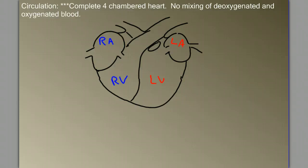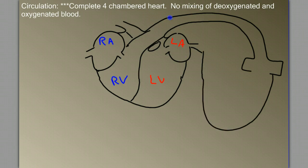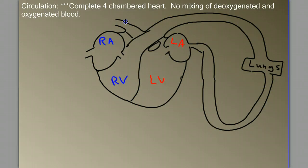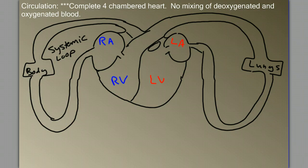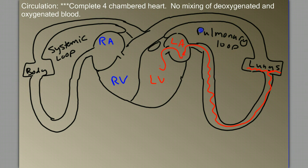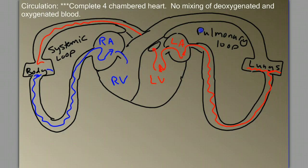Adding in the loops: the right ventricle sends blood out to the lungs — the pulmonary loop — and brings it back to the left atrium. From the left atrium to the left ventricle, and from the left ventricle we send blood out to the body — that's the systemic loop. Blood gets oxygenated in the lungs, so we have oxygen-rich blood coming back into the left atrium, then pumped out to the body where it drops off oxygen and picks up carbon dioxide. Oxygen-poor blood returns from the body into the right atrium, then the right ventricle, and is sent to the lungs to get oxygenated.